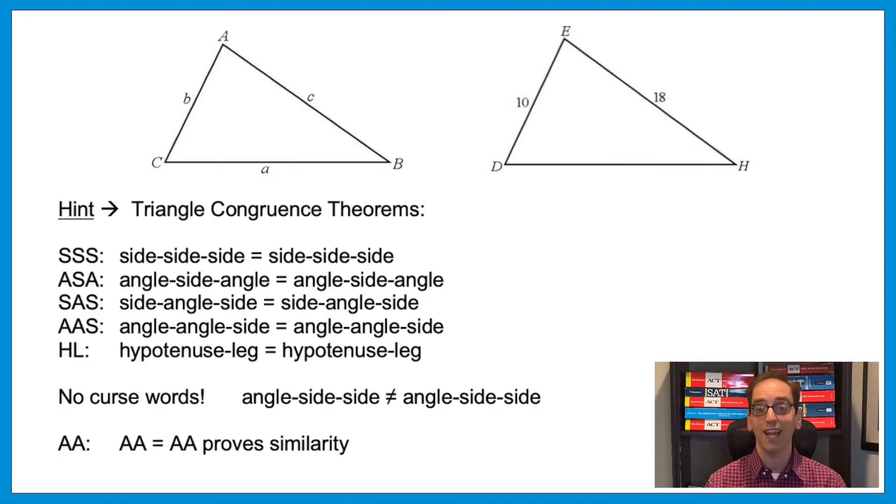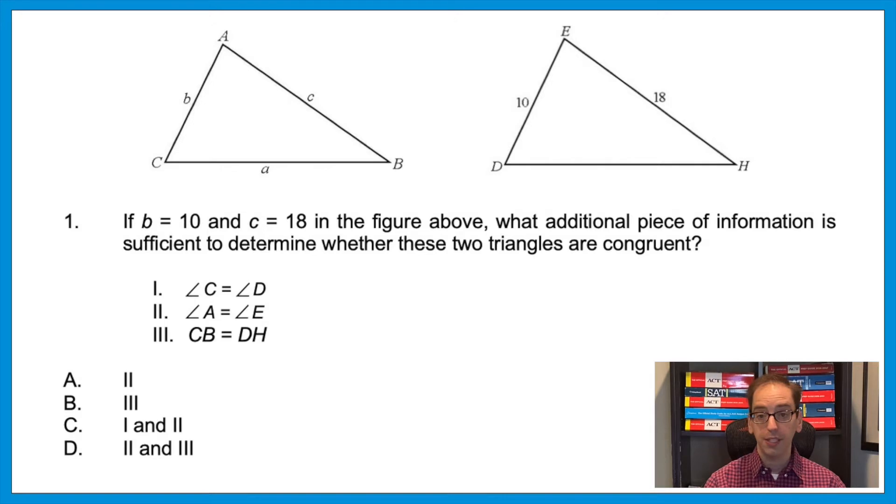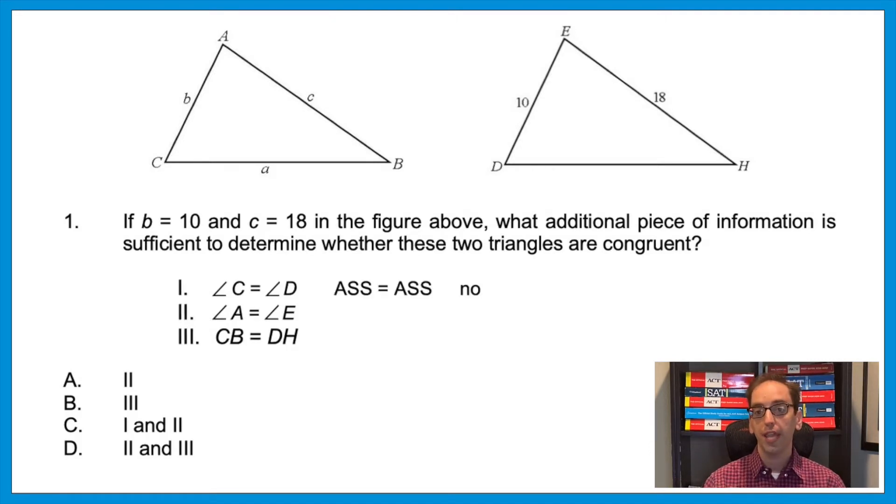But no curse words, as we used to say. So ASS—angle-side-side—doesn't work. You can't use that to prove triangles congruent. Angle-angle doesn't prove congruence, but it does prove similarity. So let's see how that helps us on this question. They tell us that B is 10 and C is 18. This means that we have two of the pairs of sides already equal. Let's see how each statement might help us. That first statement says angle C equals angle D. So let's follow what we know clockwise starting with angle C on the left. Moving around that first triangle, we have angle, then a side and a side. Likewise, going the same direction on the other triangle starting at angle D moving around, we also have angle-side-side. And does that work for congruence? No. Remember, you can't use ASS or angle-side-side to prove triangles congruent.